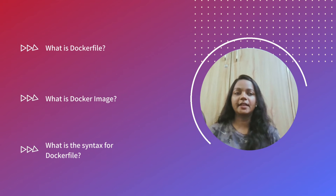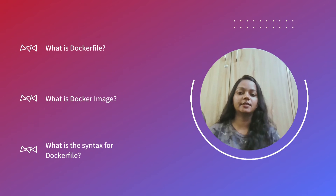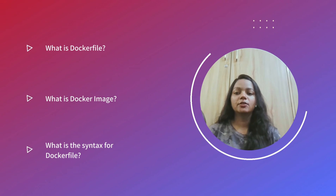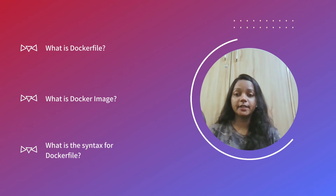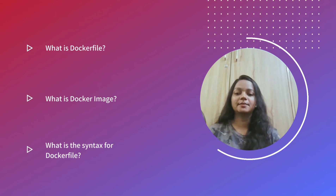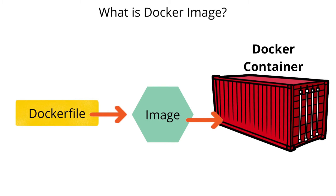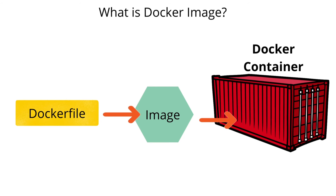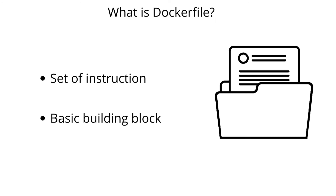Now I understood the concept of Docker containers — how they work and why we use them. But I wanted to create a Docker container of my own. I found that to create a Docker container, you need to understand Docker images and Dockerfile. Docker images are made up of multiple read-only layers and stored in Docker Hub, which is the registry for Docker images. A Dockerfile is a text file containing instructions on how to build your image, defined stepwise — it is basically the building block of the Docker container.